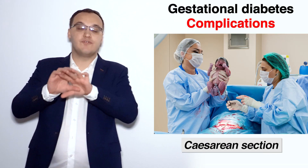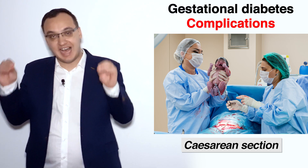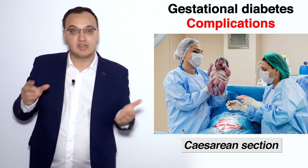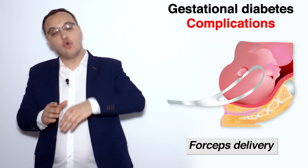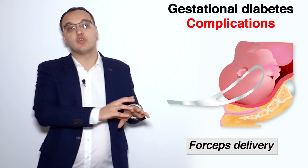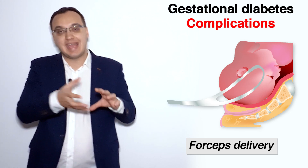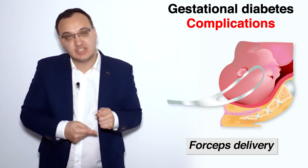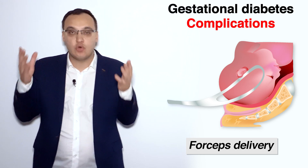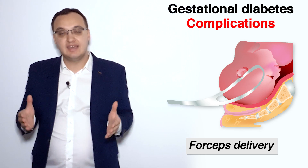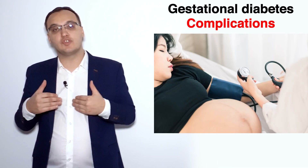The most common type of operative delivery is the cesarean section. Older methods include forceps to assist with delivery of the baby's head, or an episiotomy — cutting the vagina to make more space. All of these carry an increased risk of mortality.